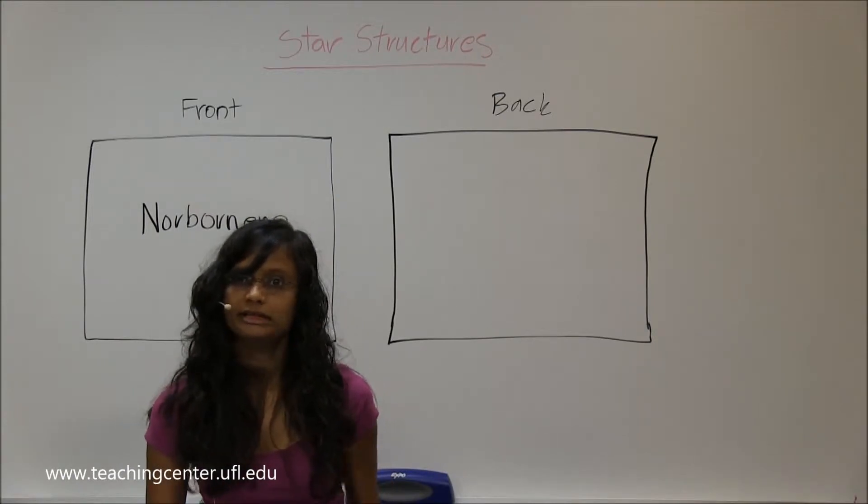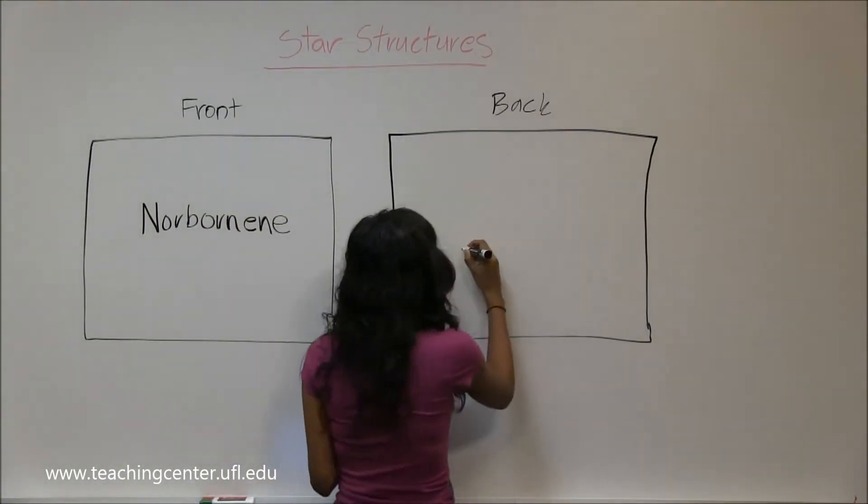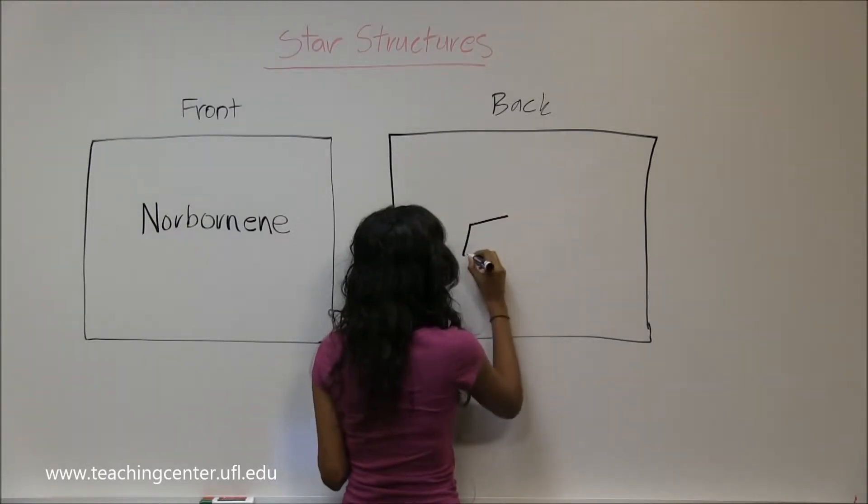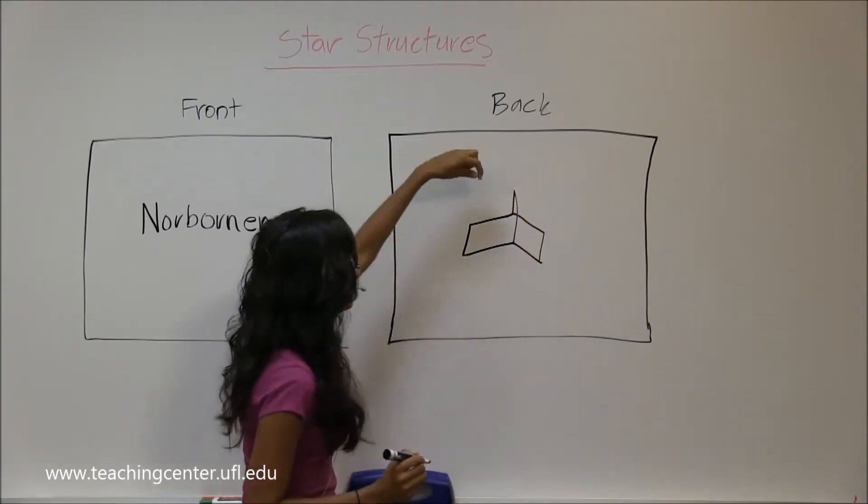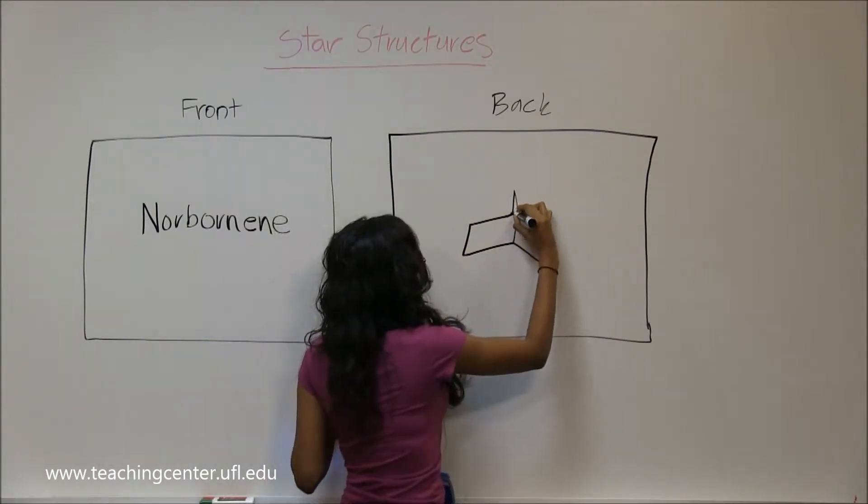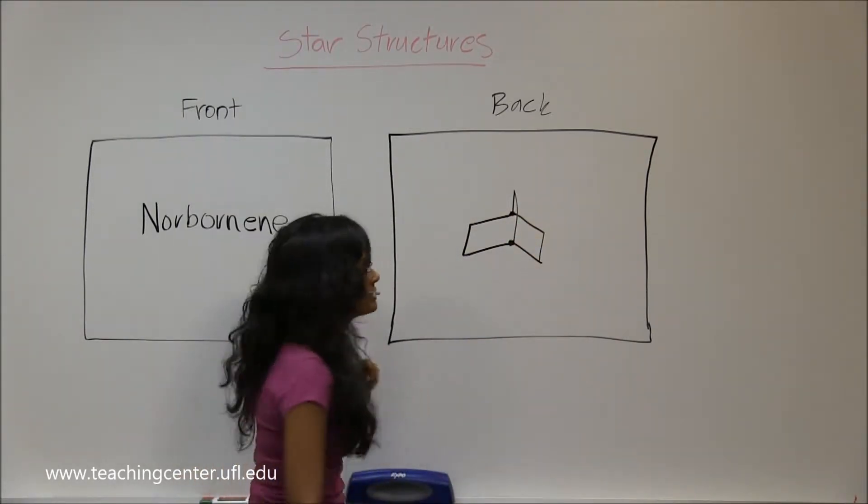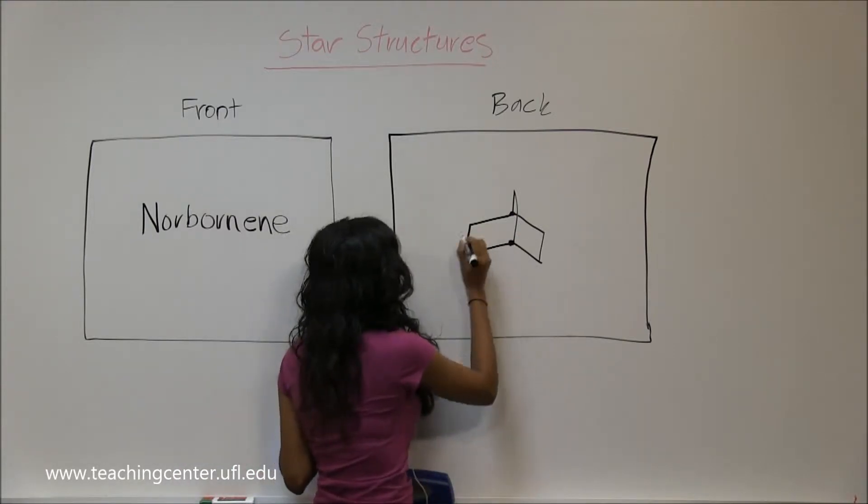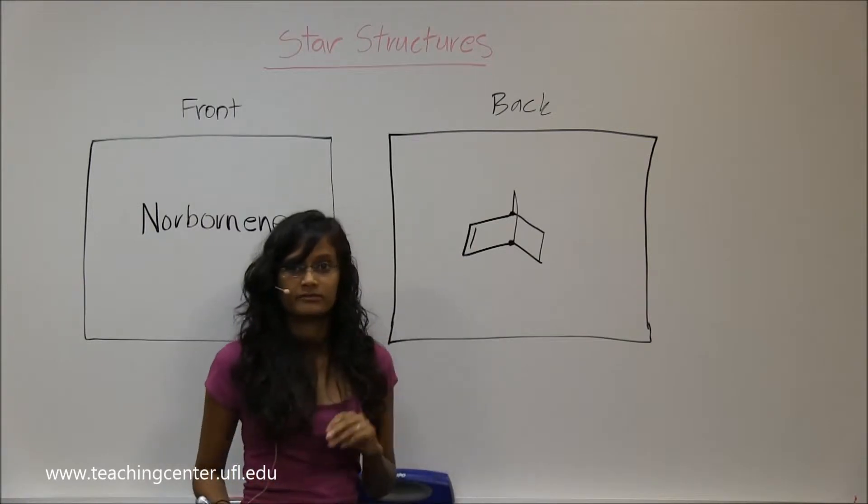Alright, norbornene is another bicyclic compound where you have... Now you actually have a carbon that's attaching to your bridgehead hydrogens, I mean carbons as well. And in means you have a pi bond somewhere down there.